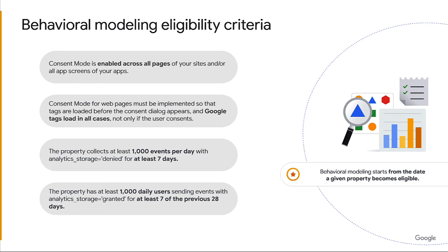Because the model is trained on the observed data for your Google Analytics 4 property, your property must have enough data to train the model. To be eligible for behavioral modeling, your property must meet the following criteria. First, consent mode needs to be enabled across all pages of your site and/or your apps. Second, consent mode for web pages must be implemented so the tags are loaded before the consent dialogue appears, and Google tags load in all cases, not only if the user consents. Third, the property needs to collect at least 1,000 events per day with analytics storage set to denied for at least seven days. And inversely, you also need to have 1,000 daily users sending events with analytics storage set to granted for at least seven of the previous 28 days. Behavioral modeling starts from the date a given property first becomes eligible.